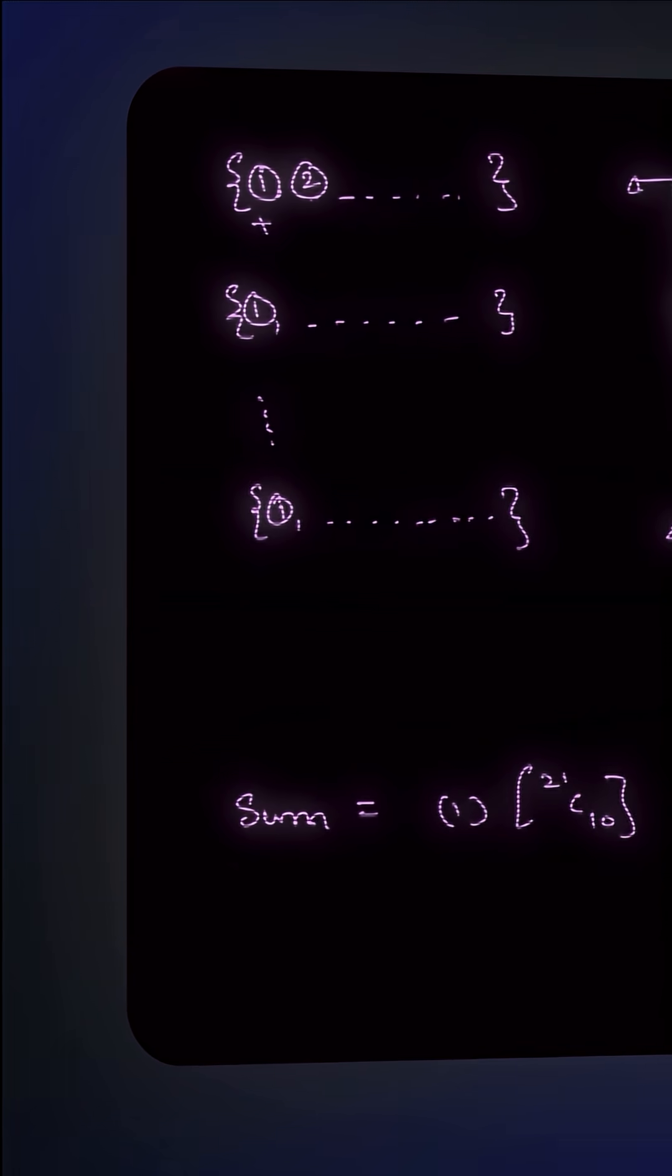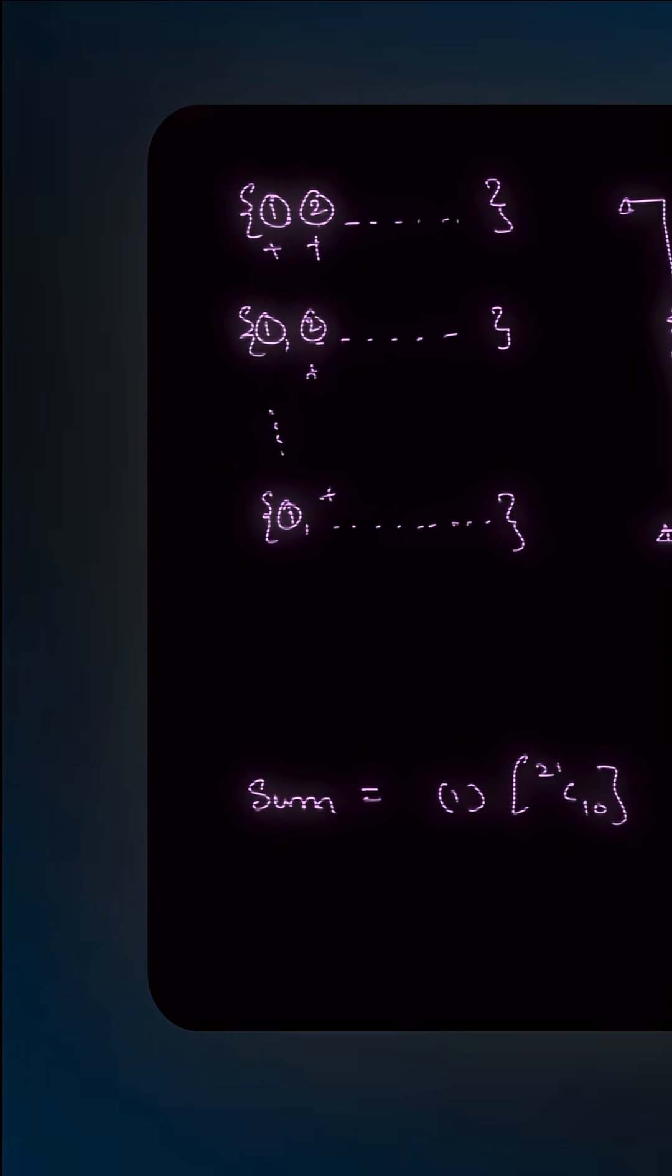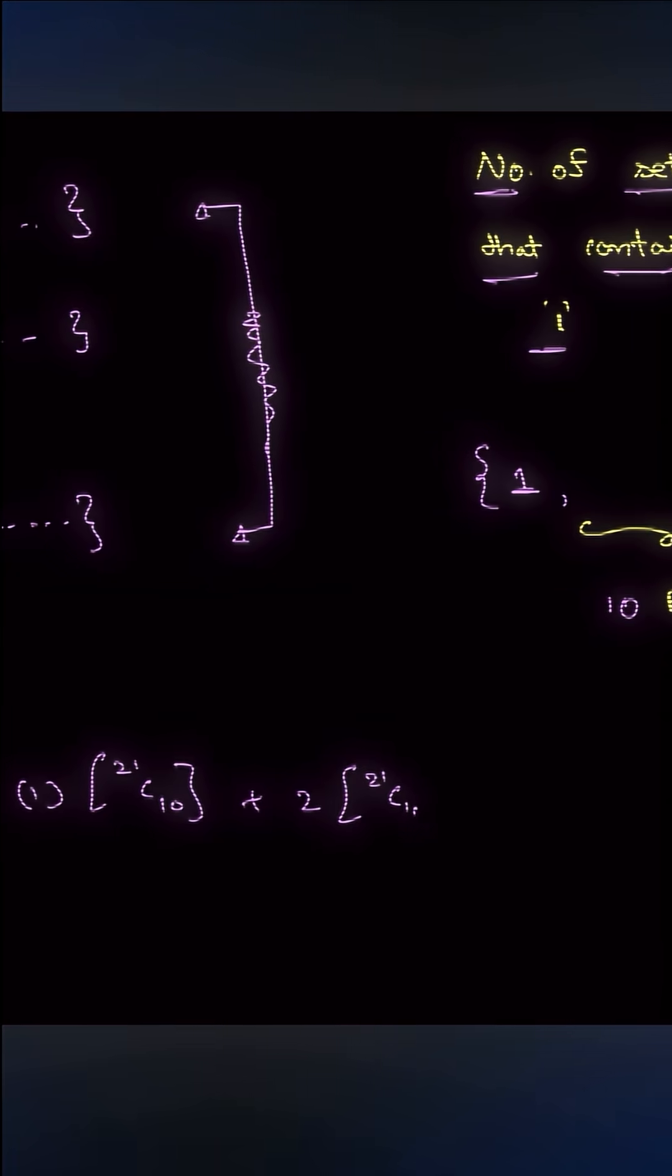Now if I take two. Let's say two is there, each one there is two. So what will I do? Two plus two plus two. So how many twos do you think I will find? I will be finding 2 into 21C10. Correct?